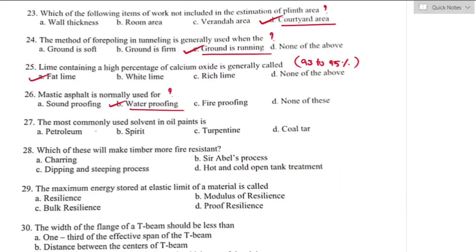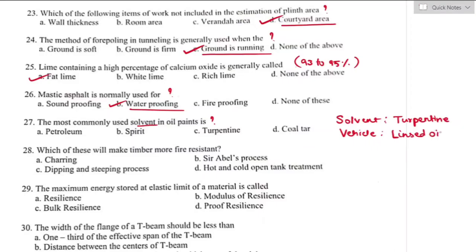Question number twenty-seven: the most commonly used solvent in oil paint is? The solvent used in oil paint is most commonly turpentine oil, and the vehicle used for oil paint is linseed oil. Option C is the right answer — solvent used in oil paint is turpentine oil.